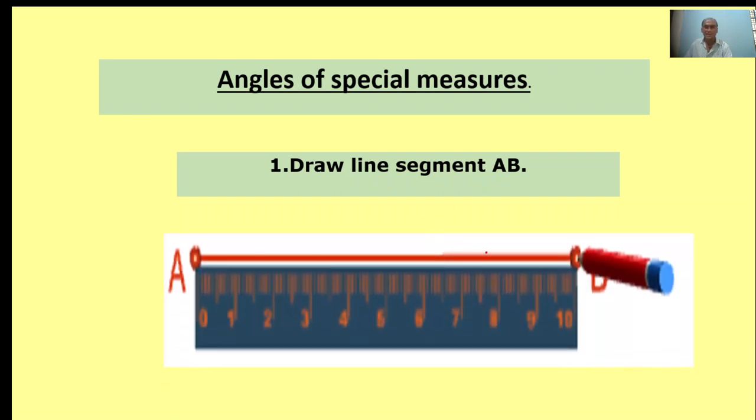Angles of special measures. Special measures are 120 degrees, 90 degrees, 60 degrees, and 30 degrees. First of all, draw a line segment AB.